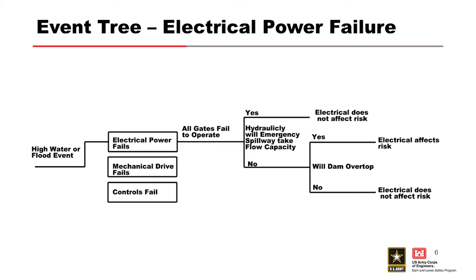This event tree steps through the events for an electrical failure that would potentially cause catastrophic failure. For electrical, typically, it's going to affect all gates on a project. A lot of times for electrical installations, there should be quite a bit of redundancy built in. You'll have two or three different sources of power. Commercial power, there may be a hydroelectric power source, emergency generator.